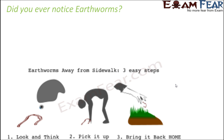Have you noticed something very interesting? During the rainy season you get to see more earthworms. In summer or winter you do not see a lot of them, but during rainy season you see a lot of earthworms on the surface. It's not that they are alive only during rainy season — they are very much there in other seasons too, but they remain inside the soil. During rainy season they come out to the surface, and that is why we see them.